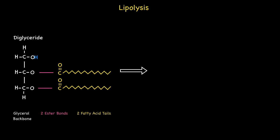Let's now look at the second step. This involves the hydrolysis of another ester bond — in this case the terminal bond on the other side. Once again this involves water depicted as HHO in blue. The blue hydrogen atom on the left bonds to the oxygen on the glycerol backbone, while the remaining blue HO attaches to the carbon on the fatty acid residue on the right.